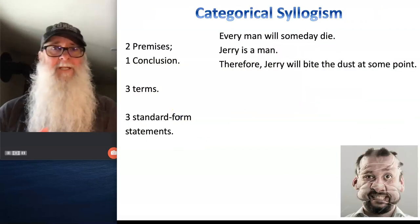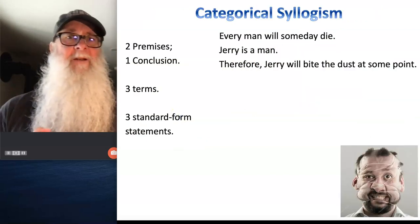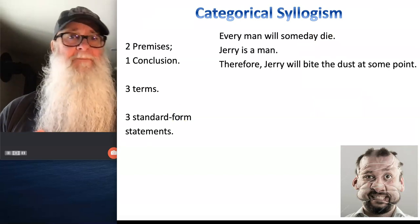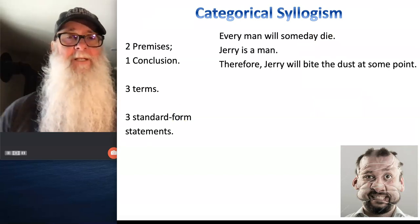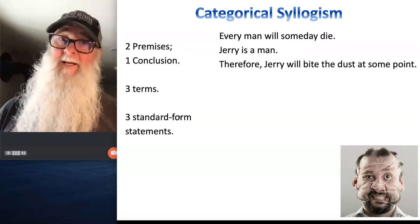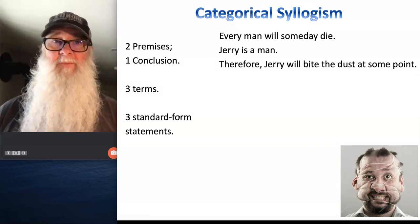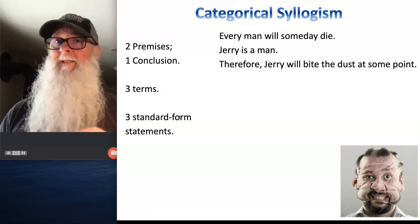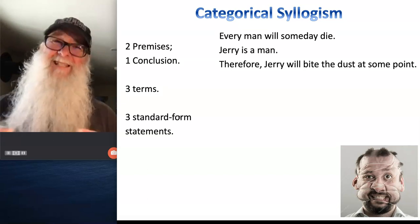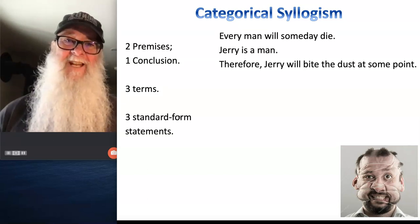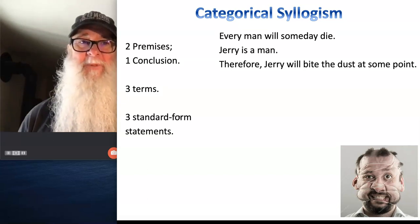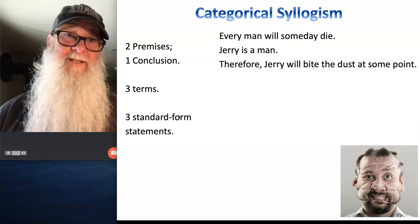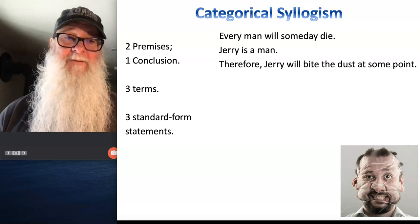Let's look at this argument. Every man will someday die. Jerry is a man. Therefore, Jerry will bite the dust at some point. Okay, so we have a categorical syllogism — an argument with two premises that's about categories of things and how they relate to one another — but it's not in standard form. We don't have our terms laid out and we don't have anything expressed as standard form statements.